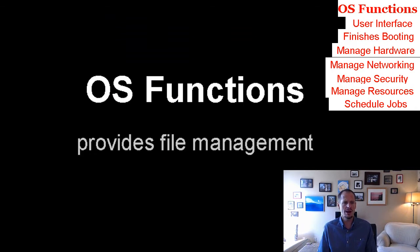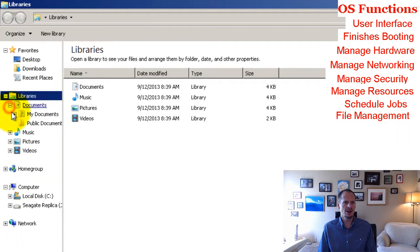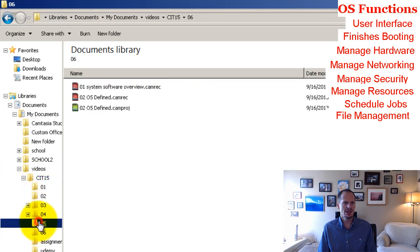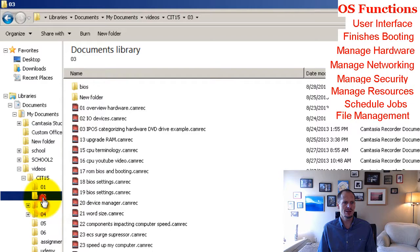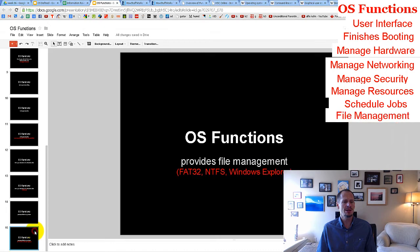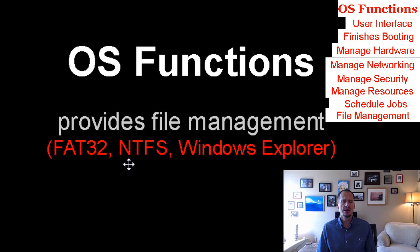The operating system also provides file management. At the basic level, that's part of the user interface — we have Windows Explorer where you can look at all your files. But file management also extends to disks, including file systems like FAT32 and NTFS, which define the file structure for disks. So those are the functions of the operating system.